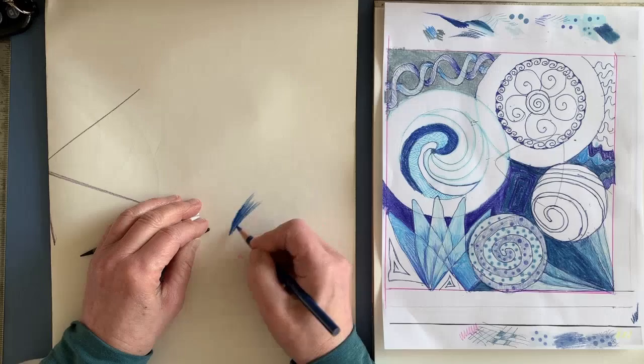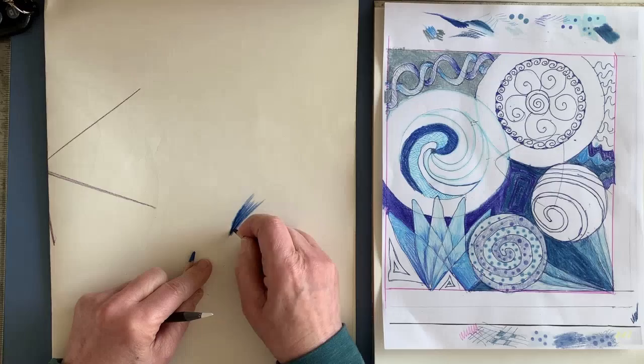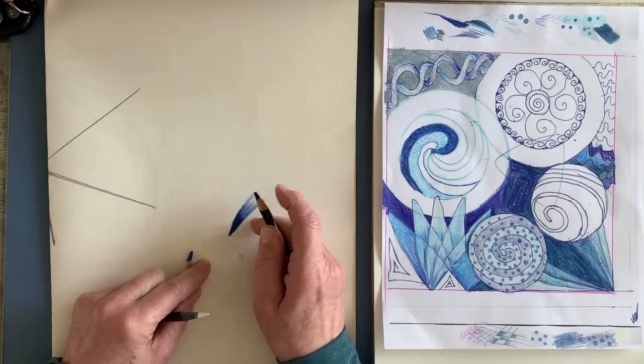Prismacolors are pencils with a lot of pigment. They go on smoothly. You can blend them. You can add layer after layer. So what I'm doing is I'm adding a lot of color for my kind of medium color. I'm adding some black.